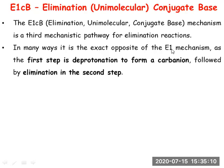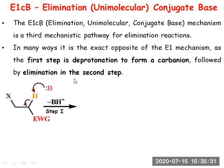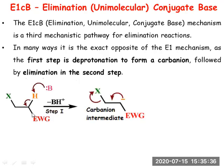The E1cB mechanism is just like E1 — it is also a two-step reaction. Instead of formation of a carbocation, a carbanion is formed in the first step by deprotonation. This carbanion then undergoes further elimination in the second step to give an alkene. A key requirement is that the hydrogen atom attached to the beta carbon must be attached to an electron-withdrawing group. This makes the hydrogen acidic, so it can be easily removed as H⁺ to generate a carbanion.